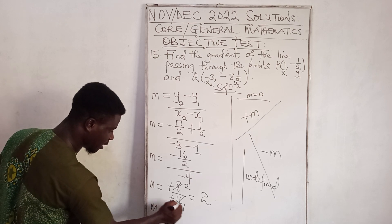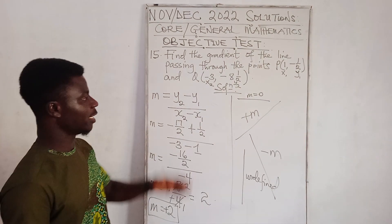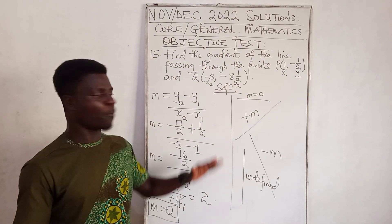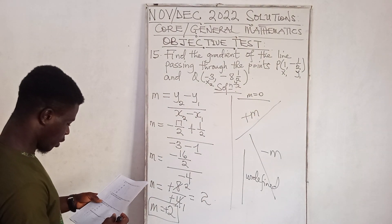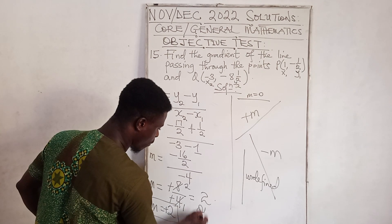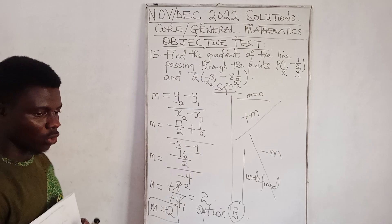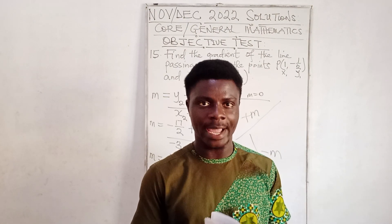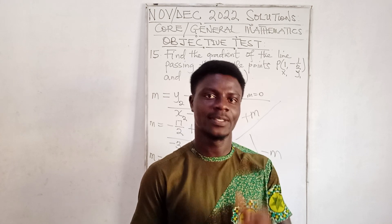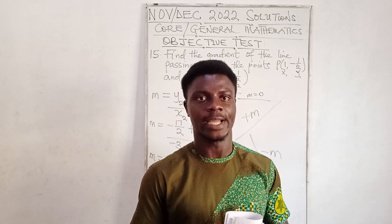Since the fractions have the same denominator, combining the numerator: −17 + 1 = −16. So M = (−16/2) / (−4). This simplifies to −8 / −4 = 2. The gradient is positive 2, confirming an upward slope. The answer to question 15 is Option B.